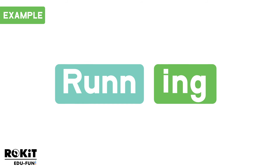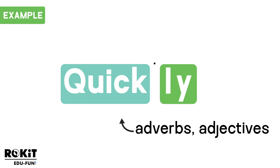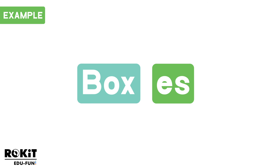Now let's look at some examples of suffixes. "Running" — the verb to run — is used for gerunds, adjectives, and continuous tenses. "Quickly" is an adverb, used for adverbs and adjectives. "Boxes" is a noun and a verb, used for plural nouns and actions.